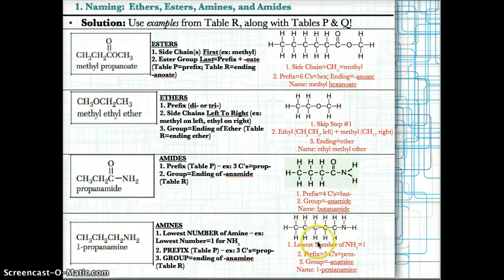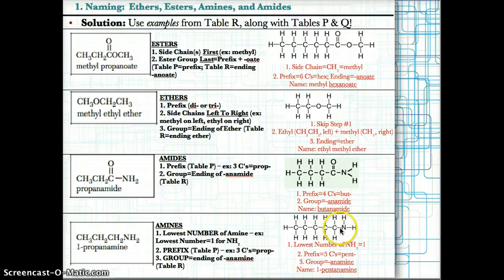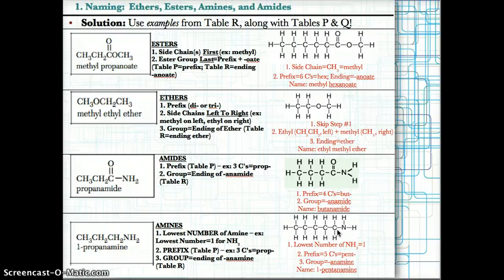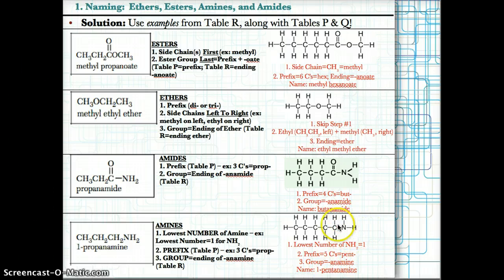Let's try another example. The lowest number for the NH2 group: numbering forwards gives 1, 2, 3, 4, 5 and backwards gives 5, 4, 3, 2, 1 — the NH2 is at position 1, since 1 is less than 5. The prefix is pent because we have five carbons. The group ending is -anamine since we have NH2. Putting all three together: 1-pentanamine — 1 because NH2 is on the first carbon, pent for five carbons, and -anamine for the NH2 group.